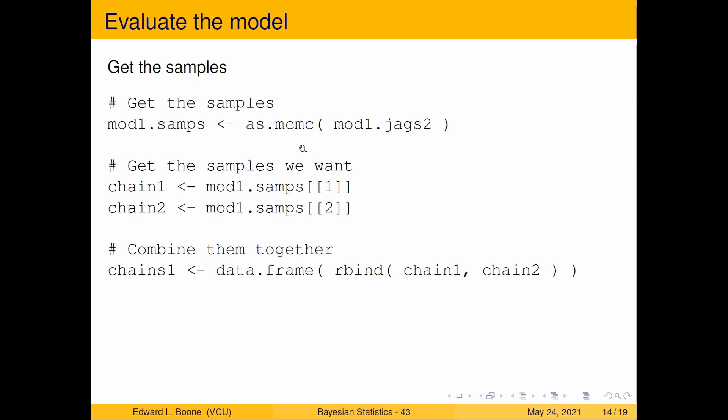Again, exactly the same as last time, don't need to change anything. Just stripping out the MCMC chain and putting them into a data frame so we can work with them. Then we're going to get some median parameter estimates. Nothing has changed really. The only thing in this video that you had to do is add a bunch of zeros, that's not that difficult.